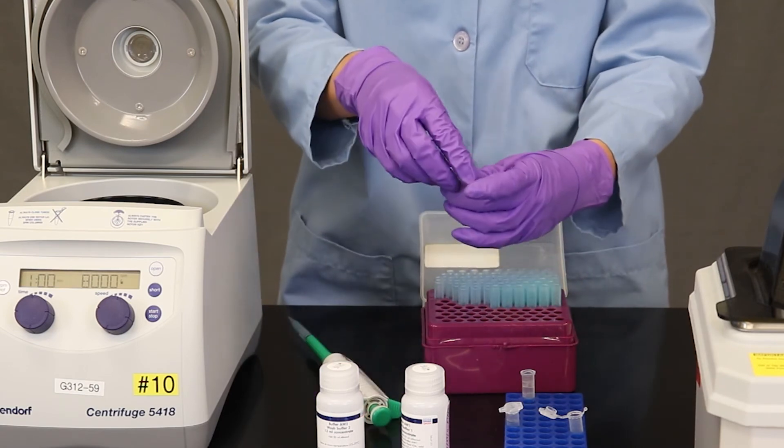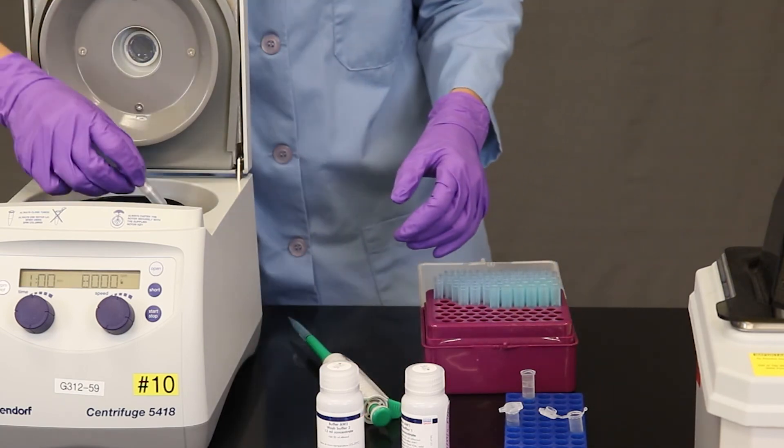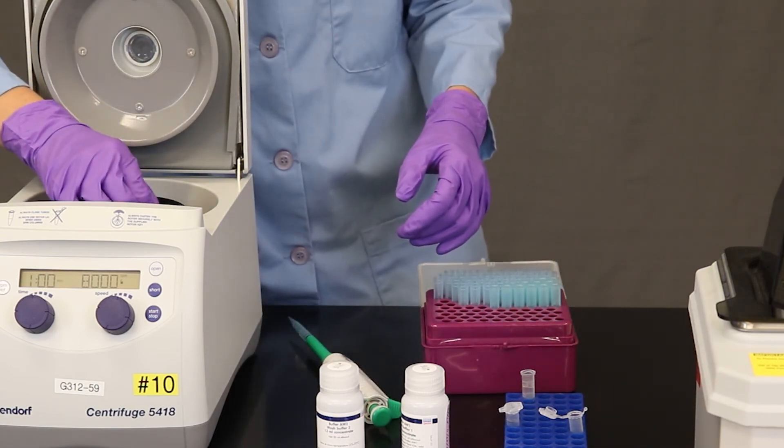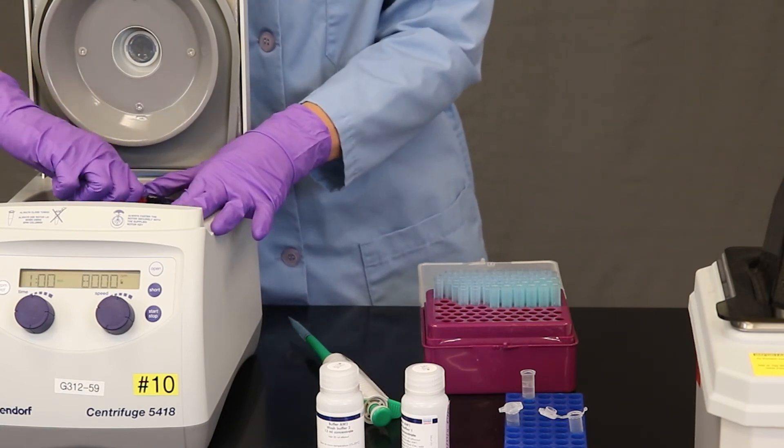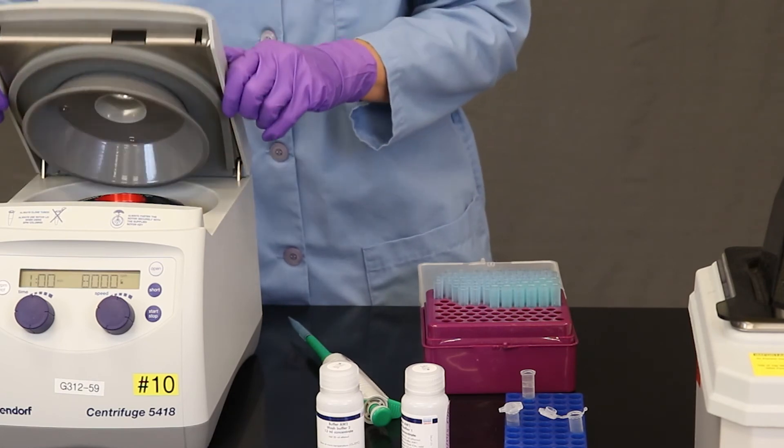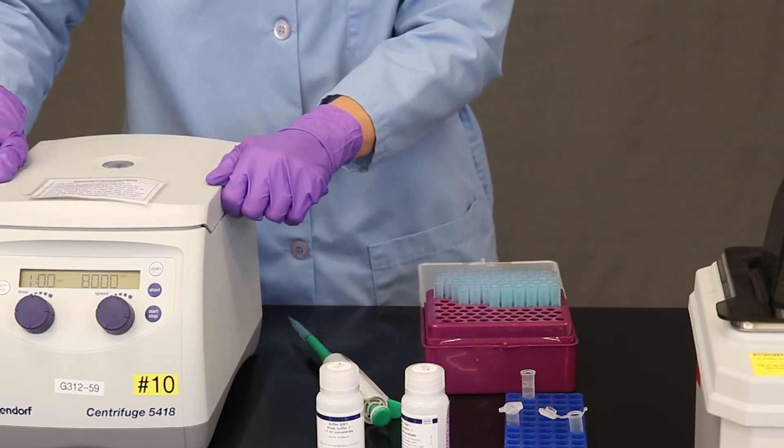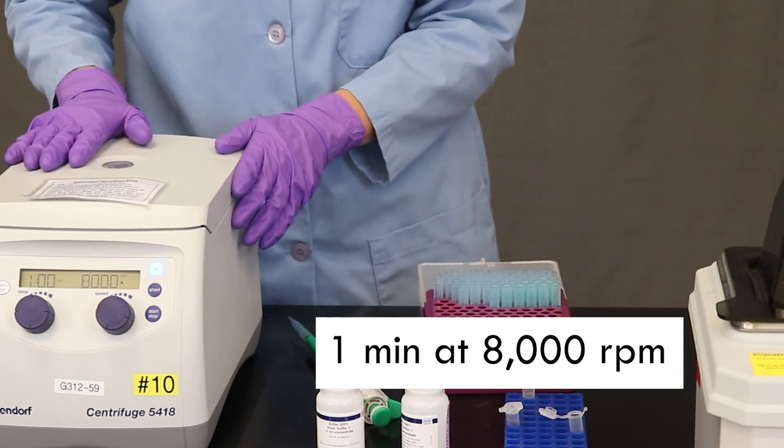So here's my wash buffer. And I'm going to go ahead and add the 500 microliters. And then I'm going to place it back in the centrifuge. And we will spin it again with the hinges pointing up and putting the top on the rotor. We will spin it for one minute at 8,000 RPM.